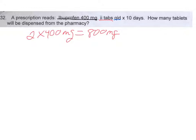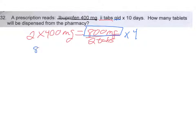So, 800 milligrams is equivalent to two tablets, and the doctor wants the patient to take that four times a day, or four doses a day. If I asked how many milligrams would a patient take a day, we know the dose is 800 milligrams. So we would do 800 milligrams times four — the patient is going to take 3,200 milligrams per day.